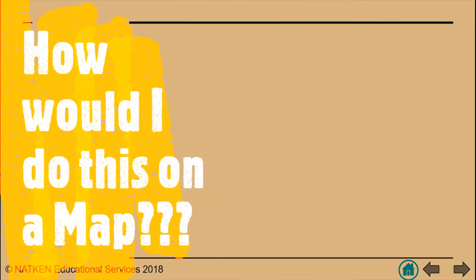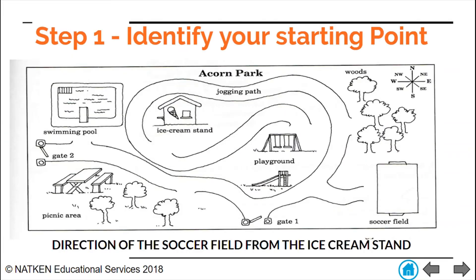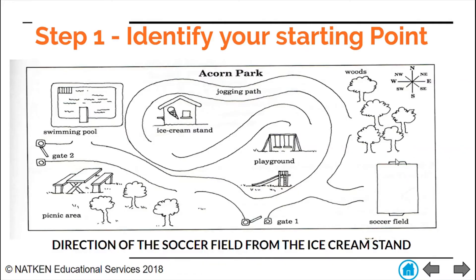So I bet you're thinking: when I'm doing this in class, how exactly would I do this on a map? Well, let's try this. The question is: what is the compass direction of the soccer field from the ice cream stand? Let's look at the map. We need to find the direction of the soccer field from the ice cream stand. We have two places in our question — the soccer field and the ice cream stand. We are leaving from the ice cream stand.